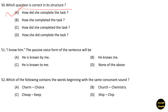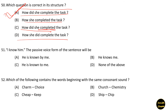In option B, 'How she completed the task,' there is no auxiliary verb. In option C, 'How did she completed,' second form and third form cannot both follow 'do/did/does.' In option D, there is no correct sequence. So option A is the correct answer.